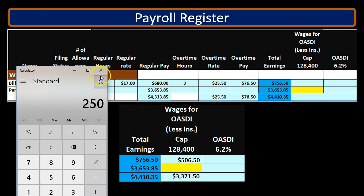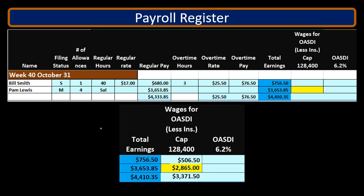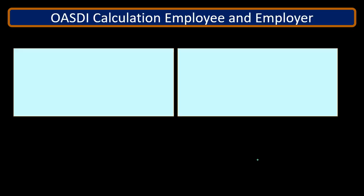The first difference is due to the cafeteria plan. The second difference is because this person hit the cap at $128,400. Therefore, their social security wages are less than their total wages, and going forward they will have zero social security wages and therefore zero social security tax for this particular employee.